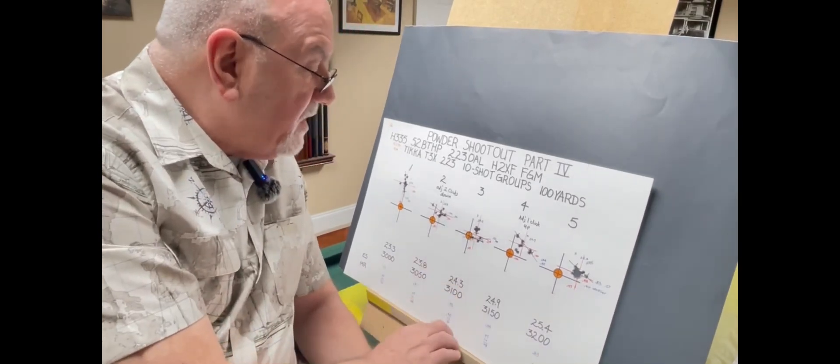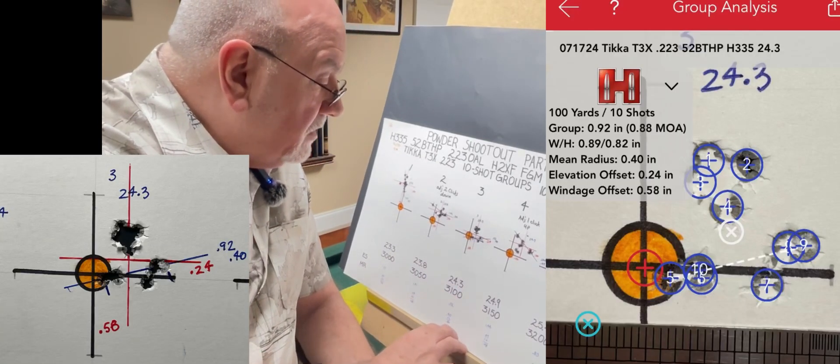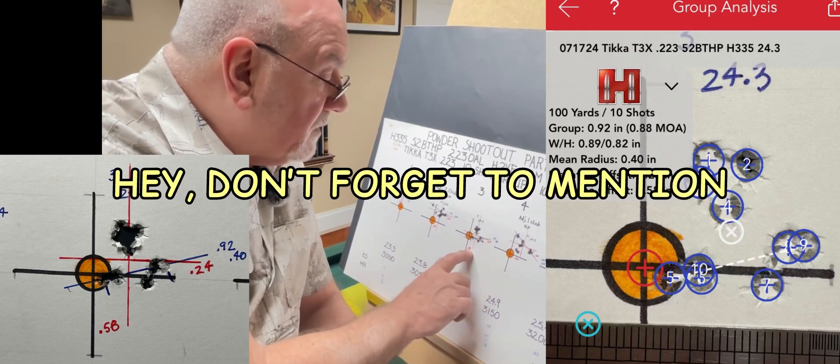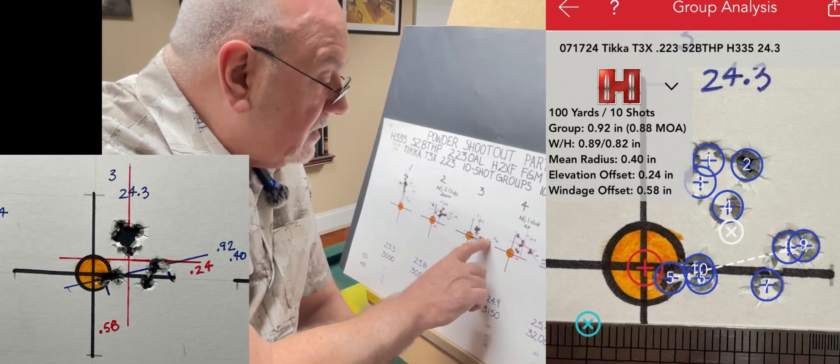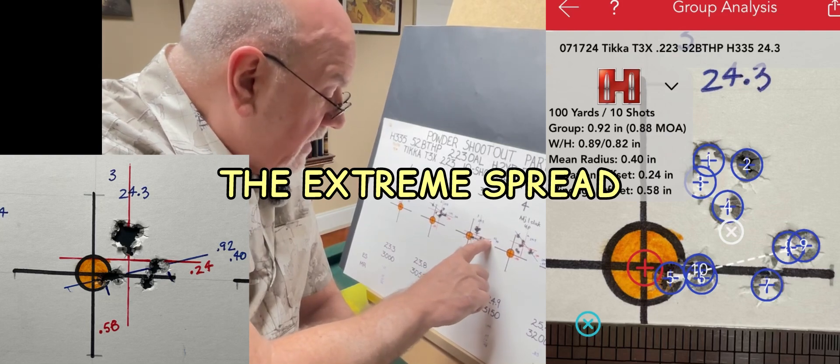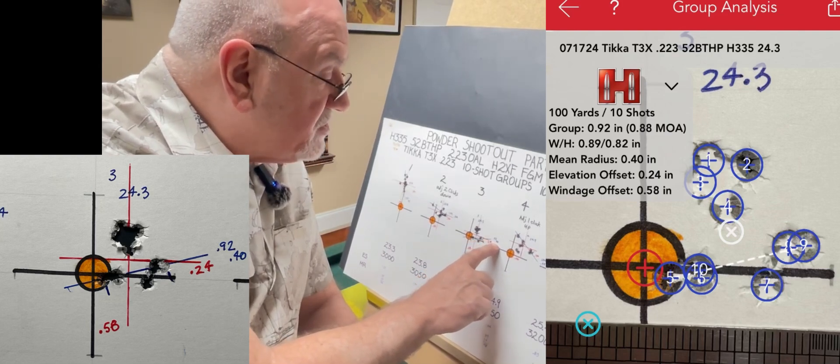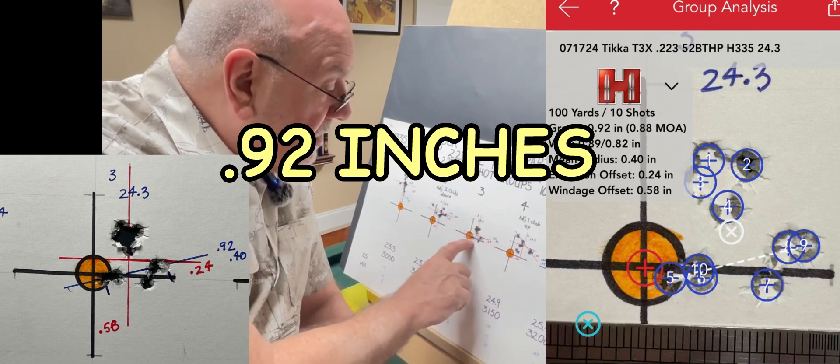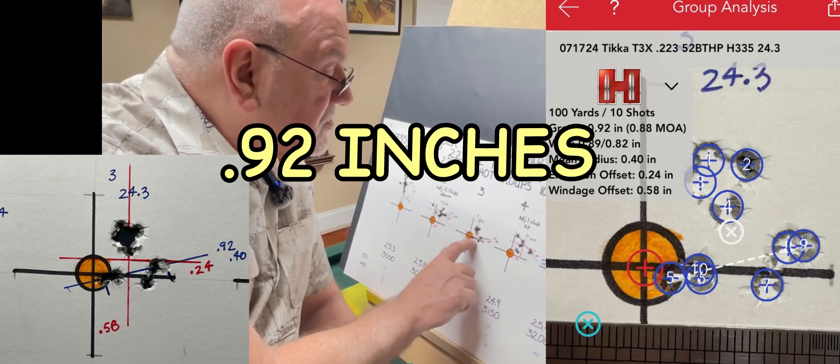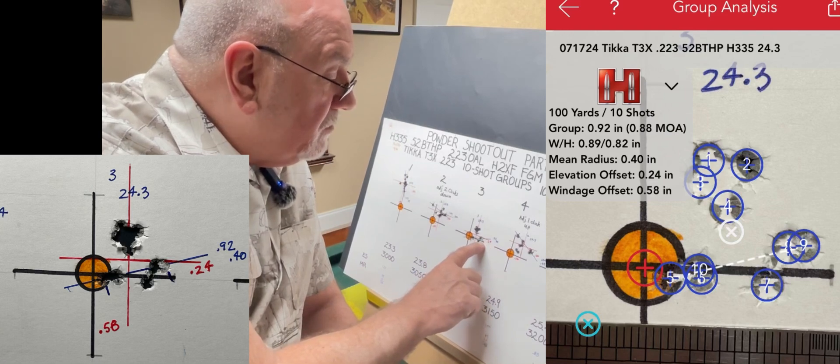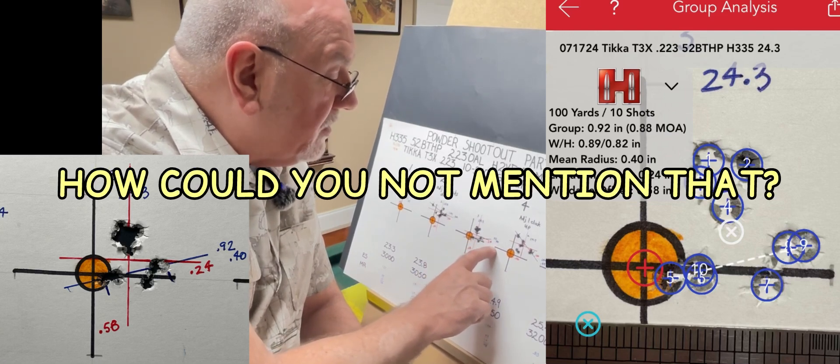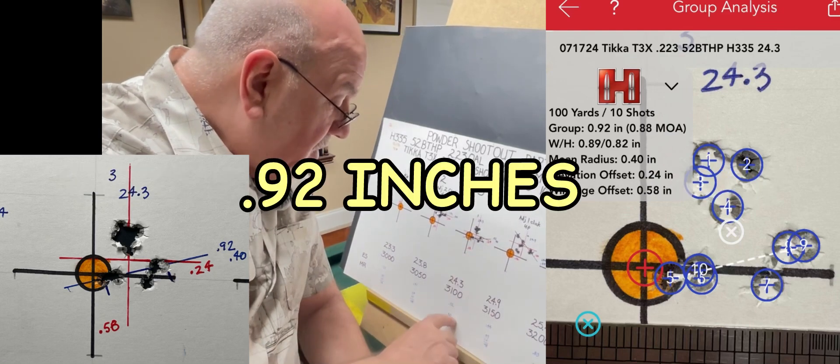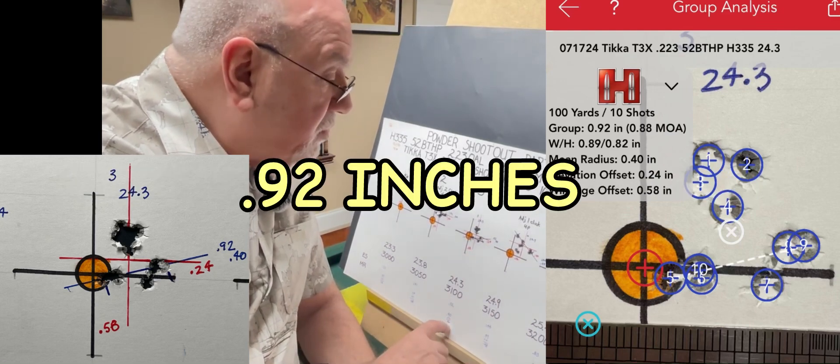So we go on to 24.3, and here's your average point of impact here, 0.58 to the right and a quarter high. And you had an average mean radius because this was a little more scattered here. It's streaming horizontally, and because it's a little more scattered there, you've got a 0.40 mean radius, which gives you an average group size of 0.8 inches.